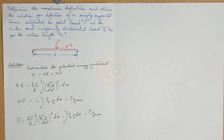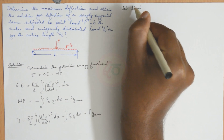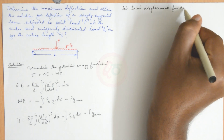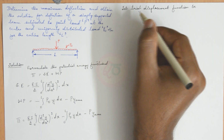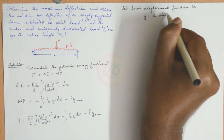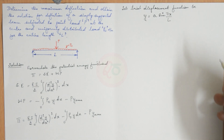Now we need to assume the trial displacement function. This trial displacement function can be either trigonometric or a polynomial, but we prefer trigonometric displacement functions for beam problems to minimize the computational effort. If you want a more accurate result, you may go with sin(3πx/L) as well added.